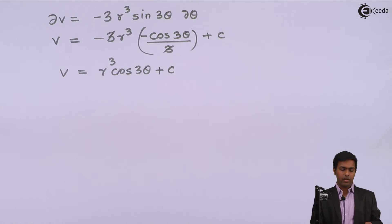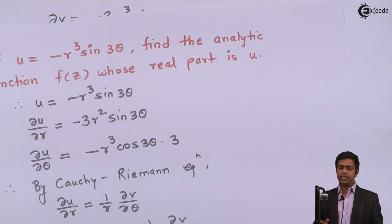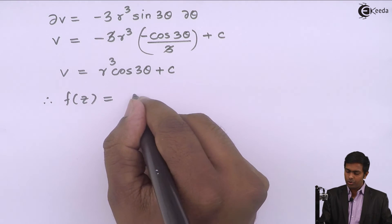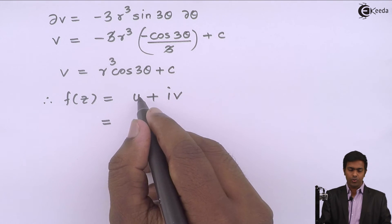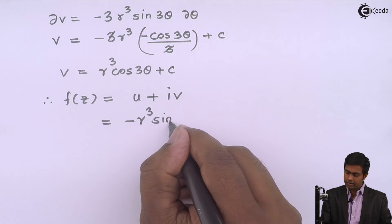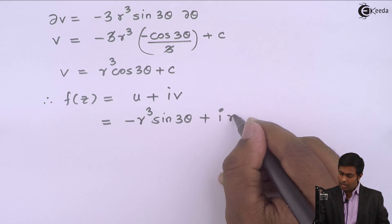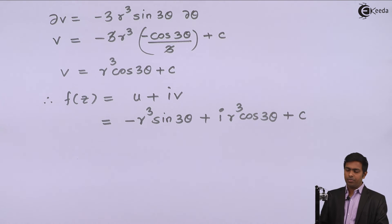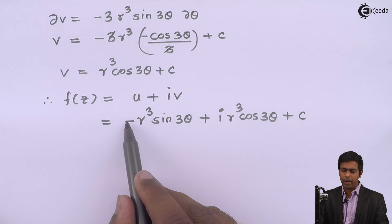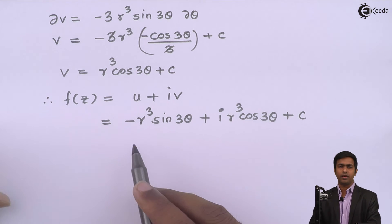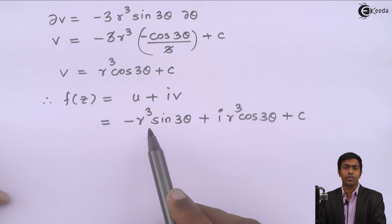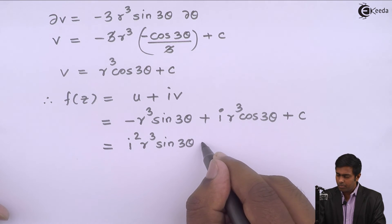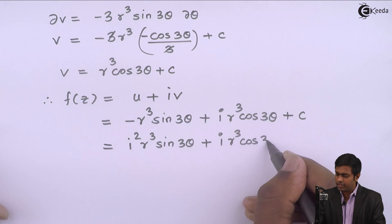We now have the value of V, and U is given in the problem. Substituting both into F(Z) equals U plus iV, we get F(Z) equal to minus R cubed sine(3θ) plus i times R cubed cos(3θ) plus C. We can rewrite the minus sign as i squared, so this becomes i squared R cubed sine(3θ) plus iR cubed cos(3θ) plus C, taking i as a common factor from the first two terms.